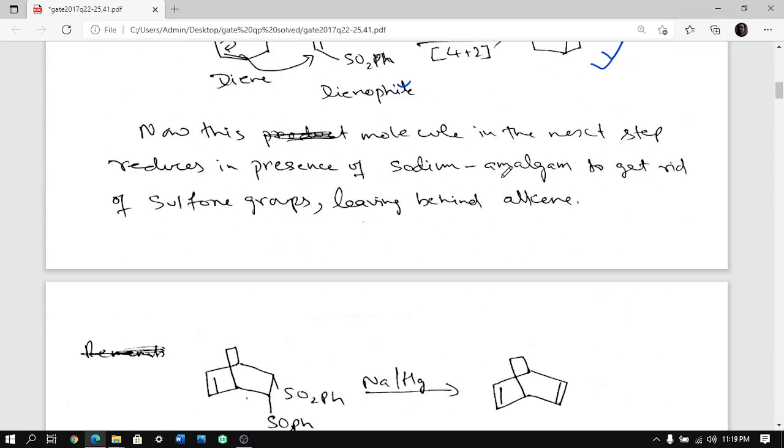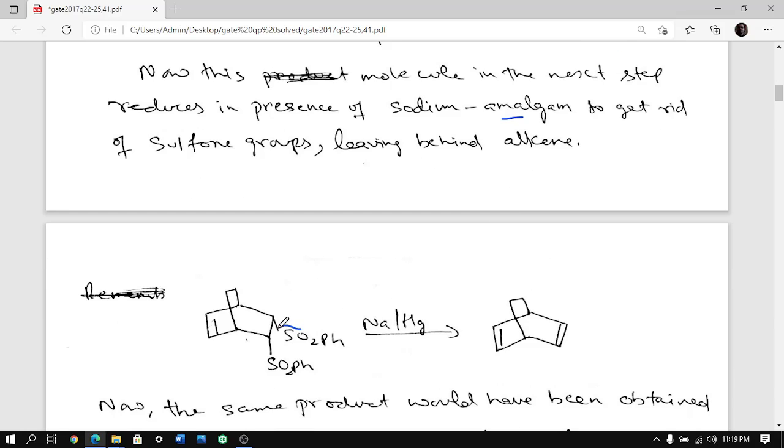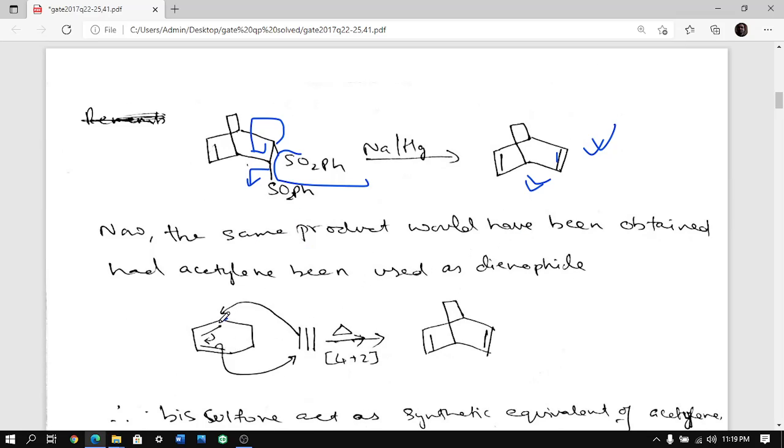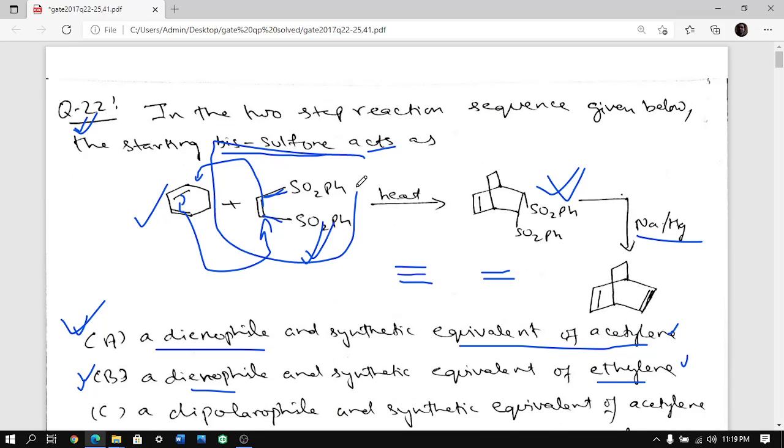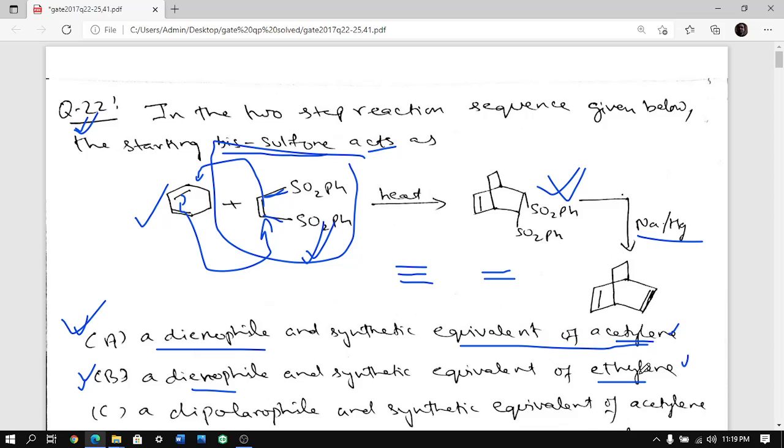Next step, sodium amalgam has affinity for sulfur and removes sulfur. The mechanism goes like this: this comes here, this goes out and you get an alkene. Now imagine if this double bond has to form from starting material, this diene should be there and the dienophile should have been alkyne. Then only double bond remains intact.